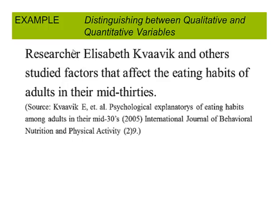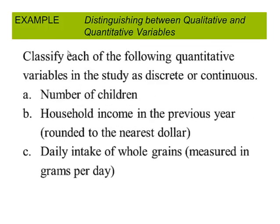Again, we're going back to the eating habits of adults in their mid-30s. The number of children, is this discrete or continuous? Well, you can't have two and a fourth number of kids or you can't have 6.31 kids. This is discrete.